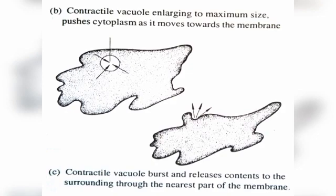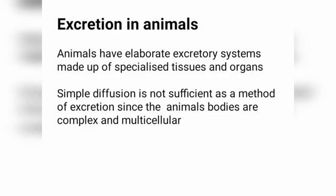Now, excretion in animals. Animals have elaborate excretory systems made up of specialized tissues and organs. Remember, plants do not have complex excretory organs. Animals, on the other hand, have detailed, complex excretory organs, all making up what we call the elaborate excretory system. Simple diffusion is not sufficient as a method of excretion since animals' bodies are complex and multicellular.